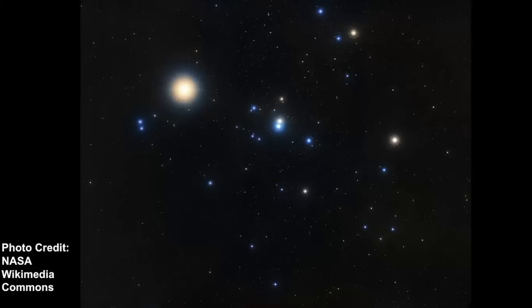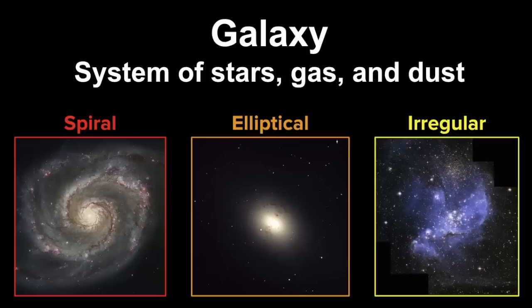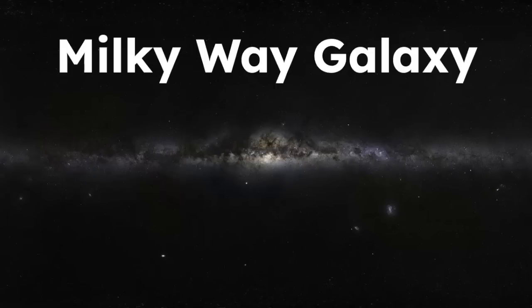Another celestial object identifiable on a star map is a galaxy, represented by an oval symbol colored in red. A galaxy is a system of millions or billions of stars held together by gravitational attraction between gas and dust. There are different types — spiral, elliptical, and irregular — classified by shape. Our Milky Way galaxy, when viewed as a panoramic view of the night sky, shows the combined light from all the stars in our home galaxy.